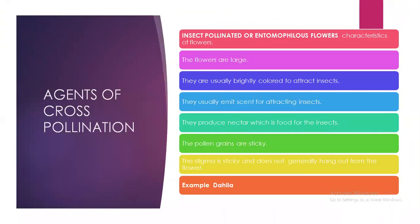Agents of cross-pollination — there are three agents: insect, wind, and water. Insect-pollinated or entomophilous flowers: the flowers are large and usually brightly colored to attract insects. They usually emit scent for attracting insects. They produce nectar, which is food for the insects. The pollen grains are sticky. The stigma is sticky and does not generally hang out from the flower. Example: dahlia.